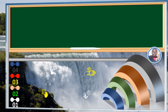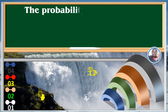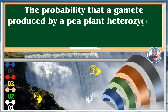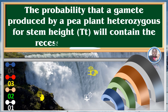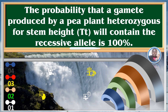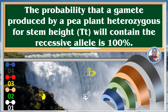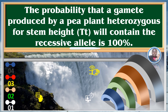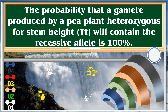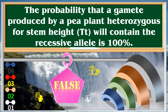The probability that a gamete produced by a pea plant heterozygous for stem height will contain the recessive allele is one hundred percent. False.